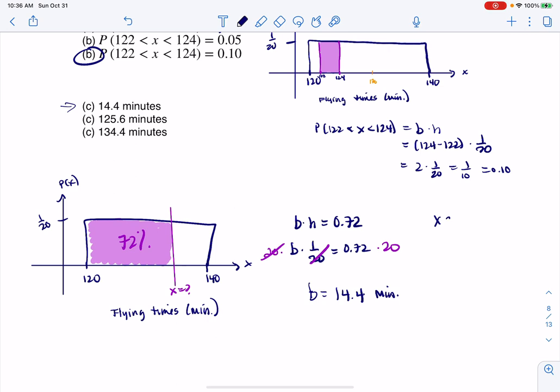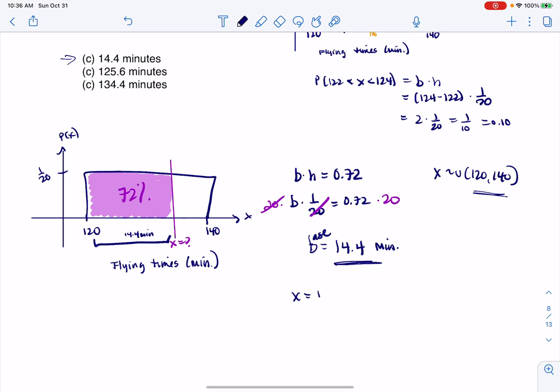But keep in mind, your variable was uniformly distributed from 120 to 140. So flight times can't even be 14.4 minutes. It's not even in the range or in the spread of 120 to 140. It's that your base, I want to reiterate this, your base is 14.4. So this distance needs to be 14.4 minutes. So really, if I want to find that x value, that would be 120 plus 14.4, I need my starting point, plus my base. And when I do that, that is 134.4 minutes. And that puts me right here at the 72nd percentile.